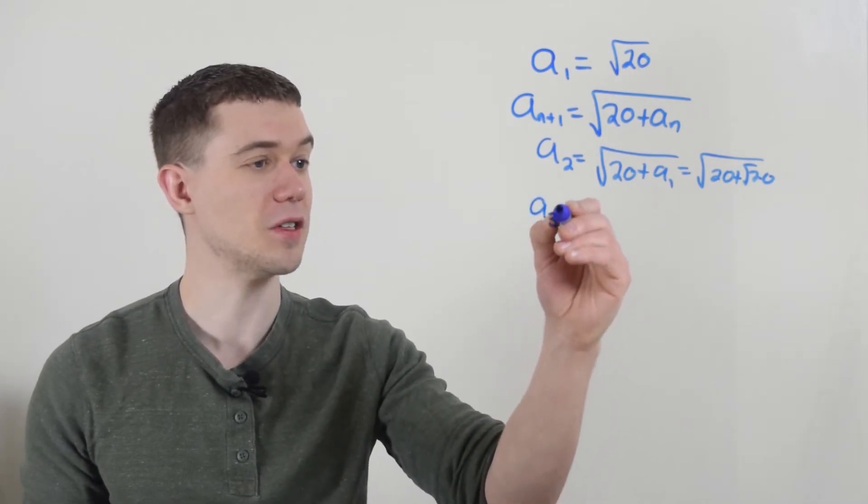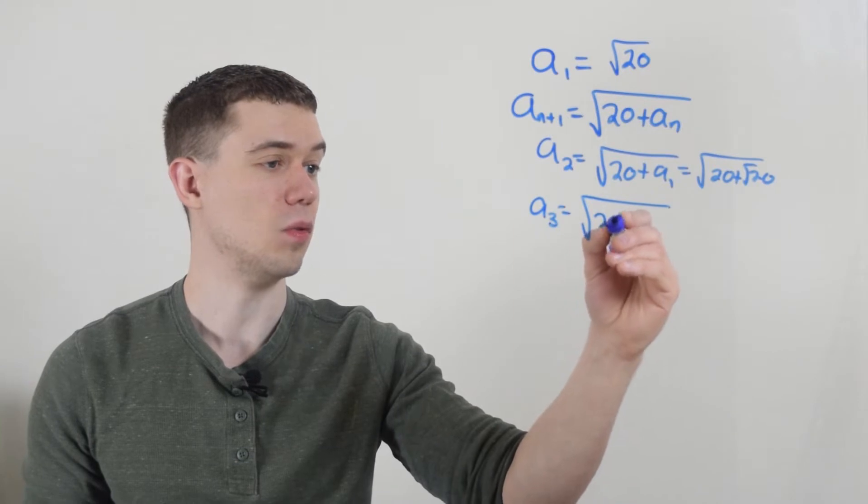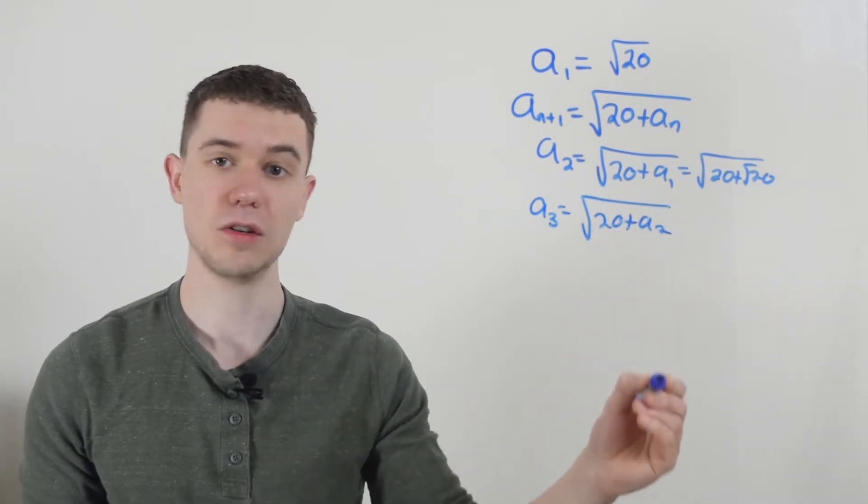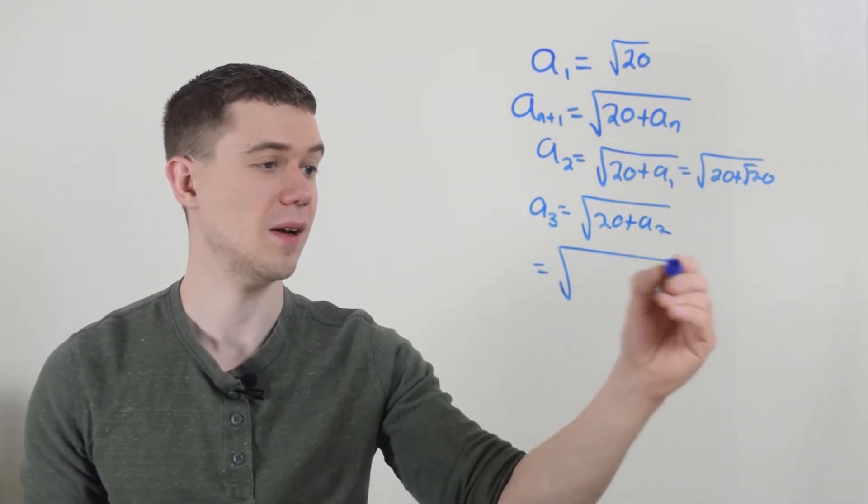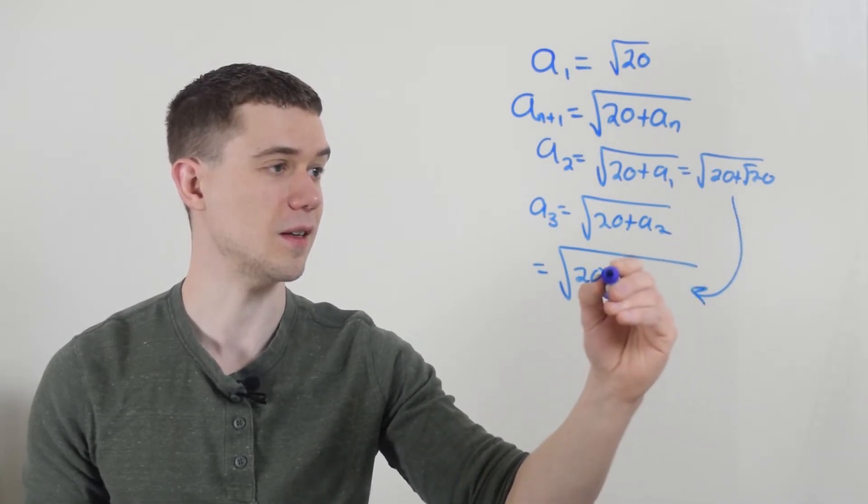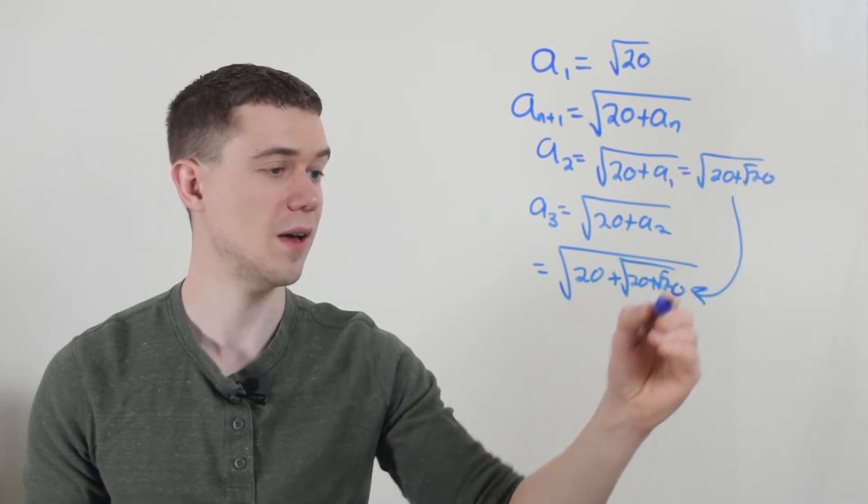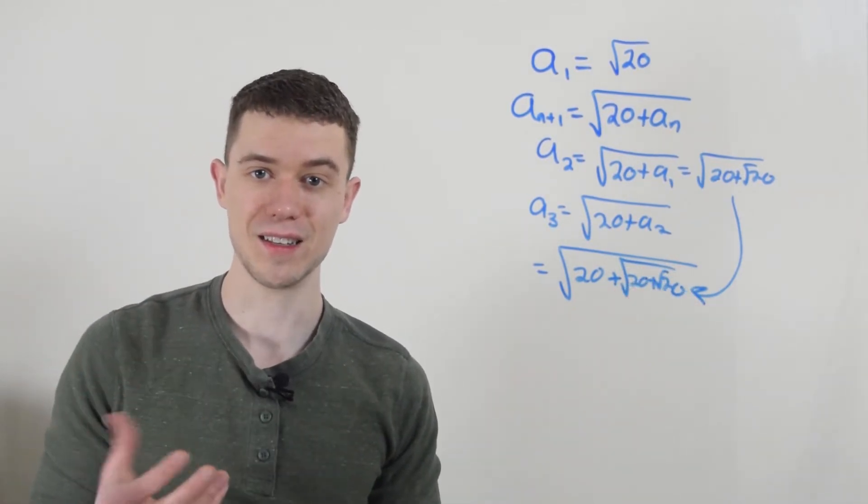If I wanted the third term, it would be square root of 20 plus the second term. And I just found the second term to be this. It would be root 20 plus root 20. And you could continue on like this forever.